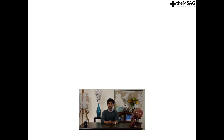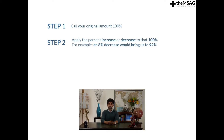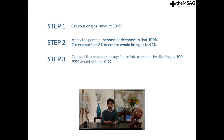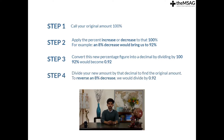Let me summarise the steps on how to approach this type of question. Step 1: call the original amount 100%. Step 2: apply the percentage increase or decrease to that 100% — for example, an 8% decrease would bring us to 92%. Step 3: convert this new percentage figure into a decimal by dividing by 100 — 92% would become 0.92. Step 4: divide your new amount by that decimal to find the original amount. To reverse an 8% decrease, we would divide by 0.92.